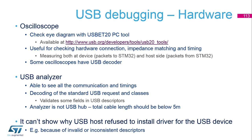Some basic hardware USB analyzers start at 1000€. A USB analyzer can show all the details about the traffic on the bus, decode messages, and show timing. You can also find possible errors in descriptors, and for example, if you are not able to establish communication between the microcontroller and PC, using an analyzer you will discover where the problems come from.